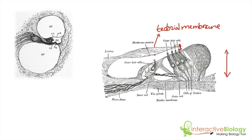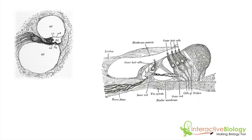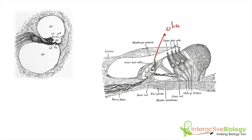Now on the organ of Corti, we have a number of different hair cells. We have inner hair cells — which would be this one here — and we have outer hair cells — which would be these four here. As you can imagine, if the entire organ of Corti is moving up and down and the tectorial membrane is moving in a windshield wiper-like fashion, that tectorial membrane is going to cause the outer part of the hair cells to vibrate. These outer parts are called cilia. That causes the cilia to bend, and that's the process that sends a signal via the auditory nerve to the brain.